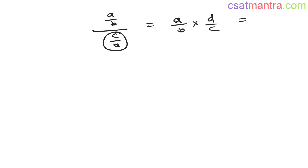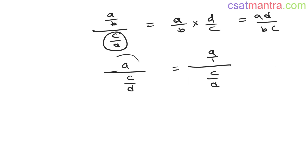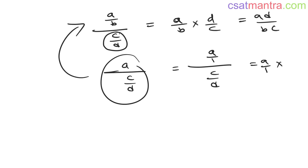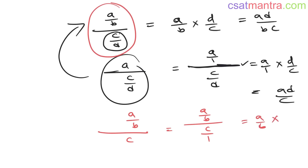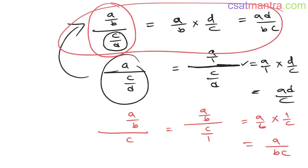If you have (A/B) ÷ (C/D), you can write it as A/B × D/C, giving AD/BC. And if you have (A/B) ÷ C, you write C as C/1, so it becomes A/B × 1/C = A/BC. Just remember these operations — every other result is derived from them.